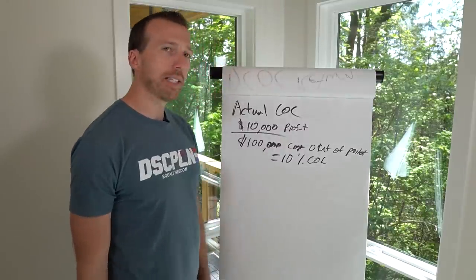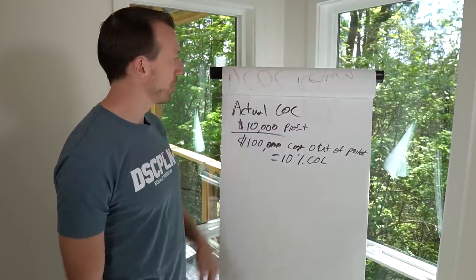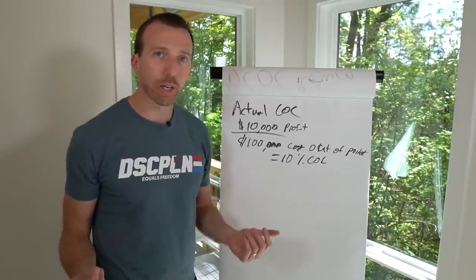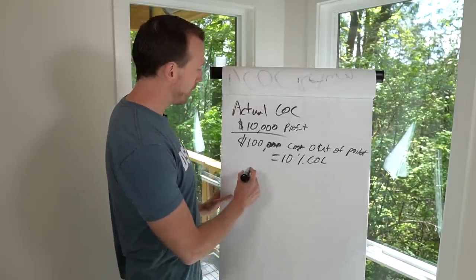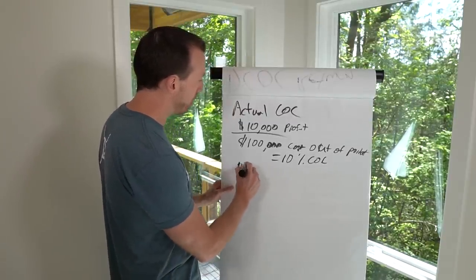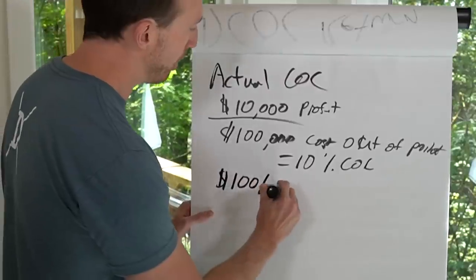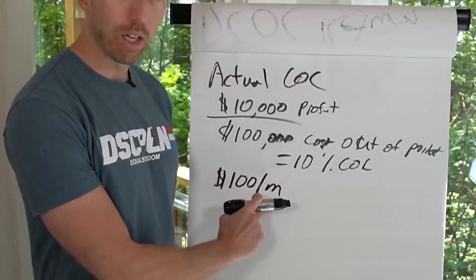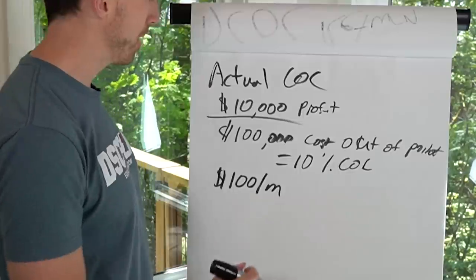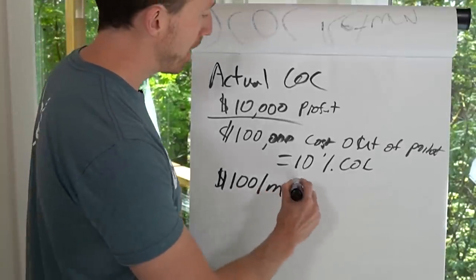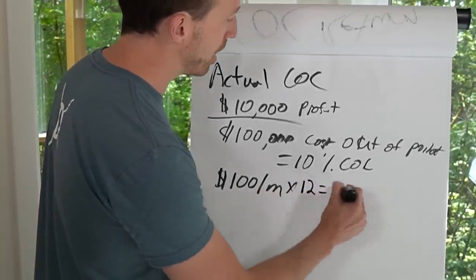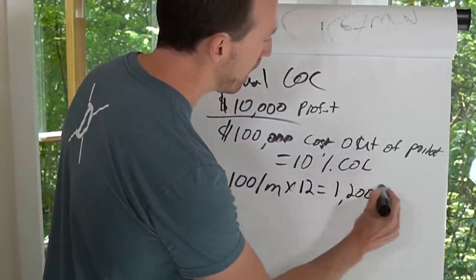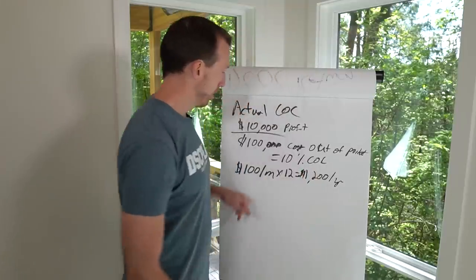You annualize the 10% cash on cash return based on those numbers. That's your actual return. Now let's say you take a rental instead. If you do a rental and you're making $100 a month — that's your net income after all expenses including debt — and if you just want to know what your annual is, you multiply by 12. So you make $1,200 annually on that cash flow.